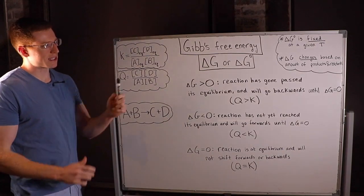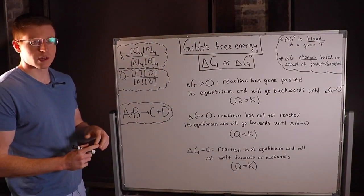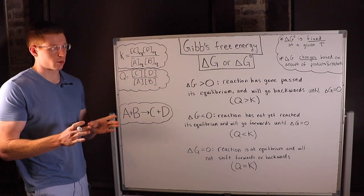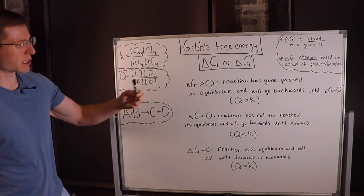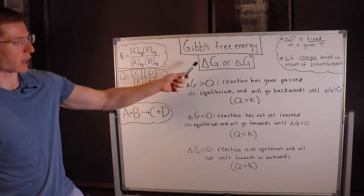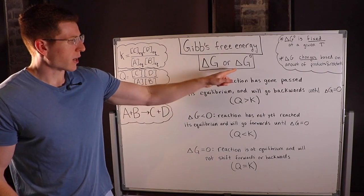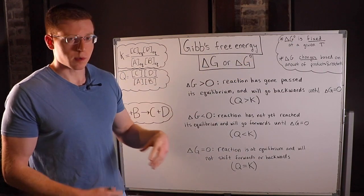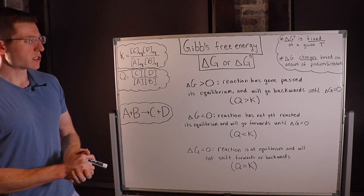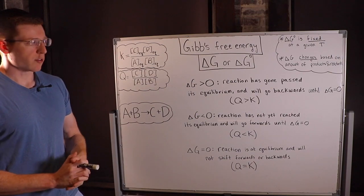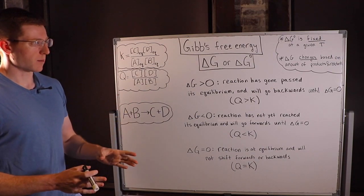In this video I'd like to discuss Gibbs free energy and how it relates to chemical equilibrium. The first thing to mention is that you'll see delta G written in a couple of different forms. Delta G with the little degree symbol up at the top denotes the delta G for a reaction at standard state and at equilibrium.